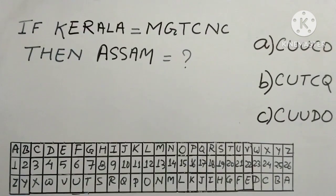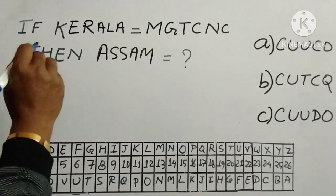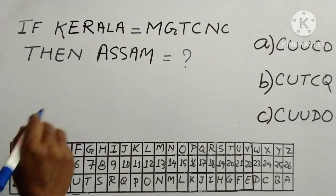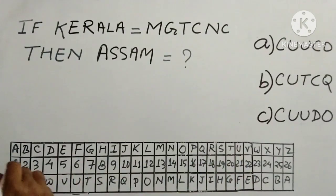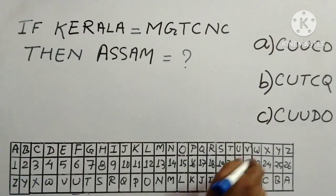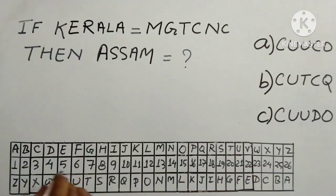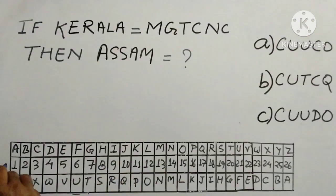This type of coding decoding question often comes in various competitive exams. In order to solve this kind of question, first you just write down the English alphabet from A to Z and number them. A is one and Z is 26th alphabet. So serially keep on giving the numbers of the alphabets.